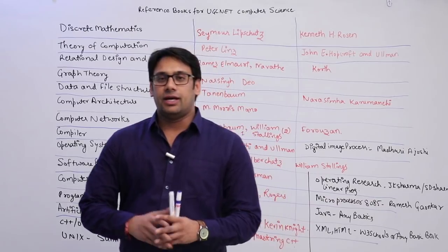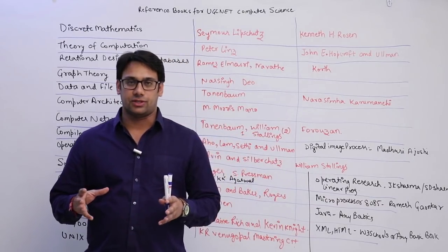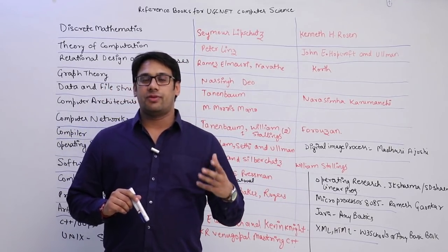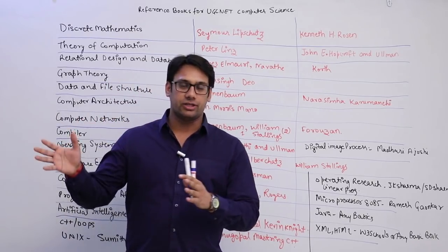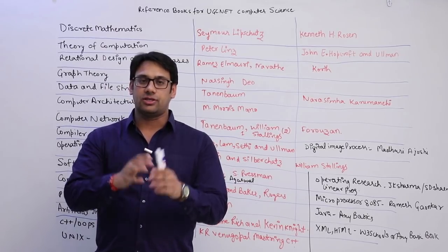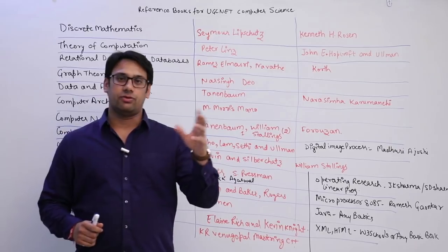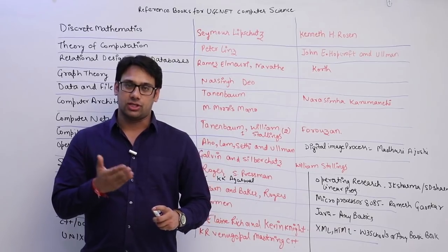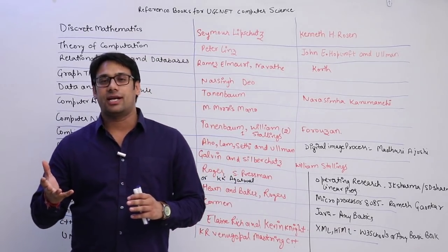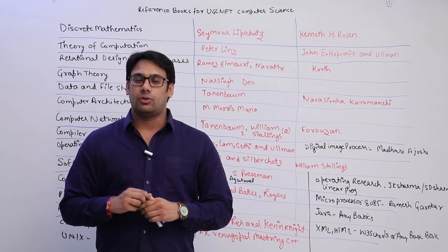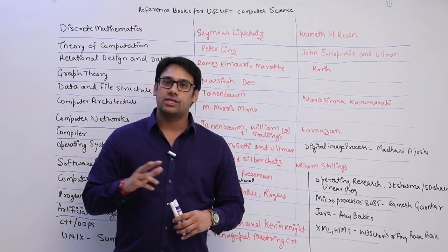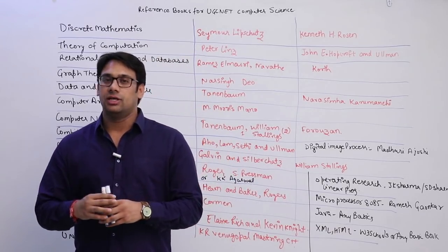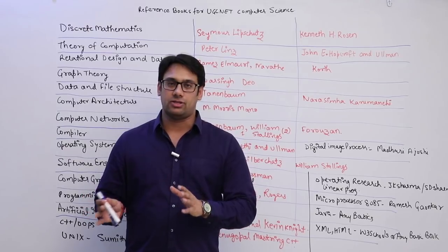We have a total of 23 subjects in UGC NET, and out of those, 18 are the major subjects. I have already created a video telling you the percentage of marks you are going to get from each subject. Even after the exam pattern changed — we used to have Paper 2 and Paper 3, now we have Paper 1 (general aptitude) and Paper 2 (completely technical) — I feel the percentage of marks from each subject will not change significantly.